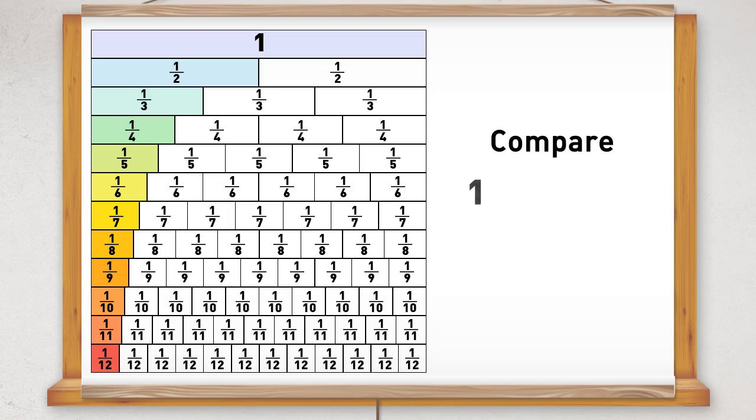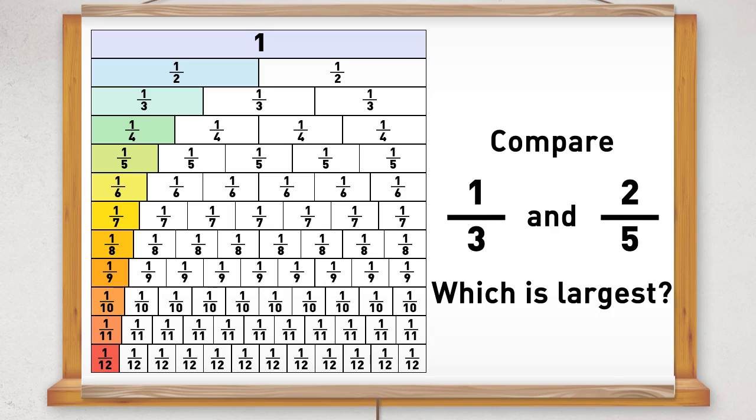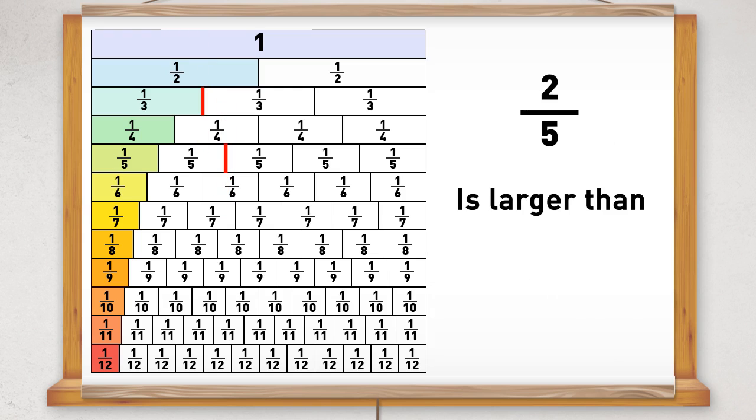Suppose we want to compare one-third and two-fifths to determine which is the larger. By looking at the fraction wall, one-third finishes there and two-fifths finish here. So two-fifths is larger than one-third.